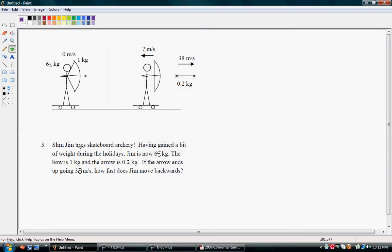Alright, so here we have Slim Jim who is trying out skateboard archery. Having gained a bit of weight during the holidays, Jim is now 65 kilograms.